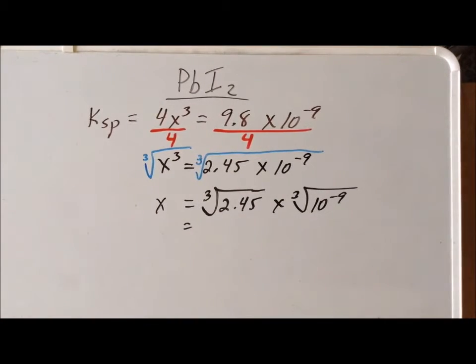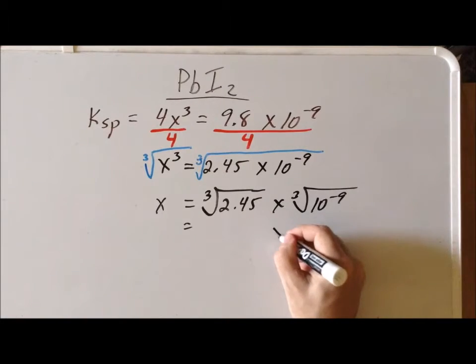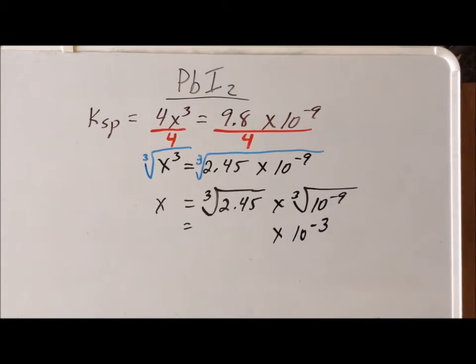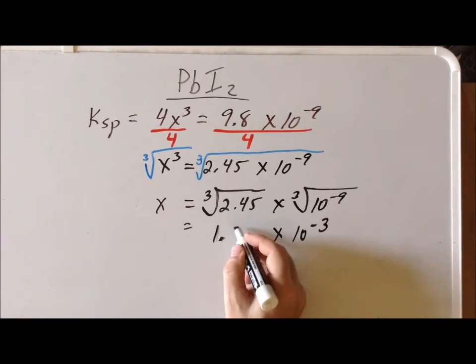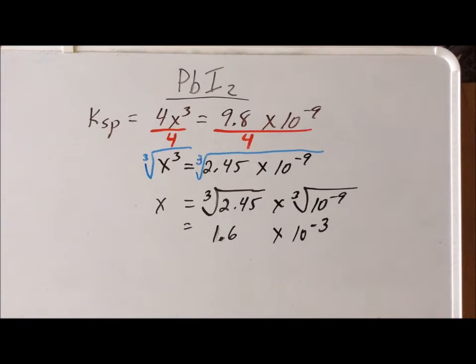On the right hand side, the cube root of 10 to the minus 9 gives us 10 to the minus 3 power. If you are not sure and you want to double check that you have done this properly, simply cube this. So multiply 10 to the minus 3 times 10 to the minus 3 times 10 to the minus 3, and you will see that you actually do end up with 10 to the minus 9, which proves that the cube root of 10 to the minus 9 actually is 10 to the minus 3. Then we only need to take the cube root of 2.45 and use our calculator to do that, and we get a value of 1.6. Now notice, even though we kept three digits here, we are given the Ksp expression with only two significant figures. Therefore, in our final value for x, we want to keep only two significant figures.